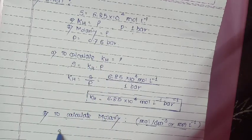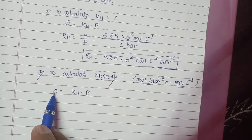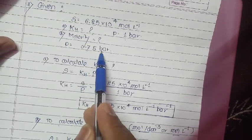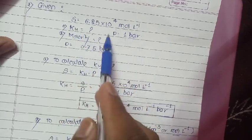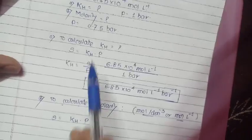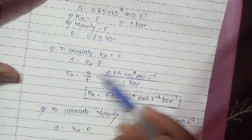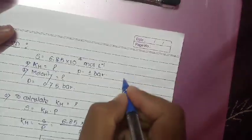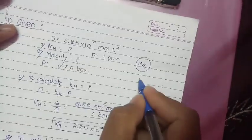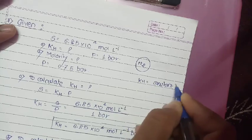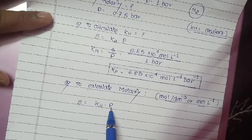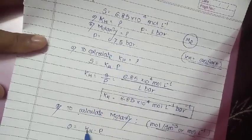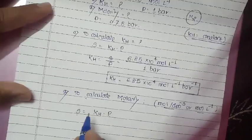We again use Henry's law: S = KH × P, but now at partial pressure 0.75 bar. In the first case we calculated the Henry's law constant at 1 bar. The gas is still nitrogen, and Henry's law constant KH is specific to that particular gas. To calculate S, we need KH and P. P is already given as 0.75 bar, and KH was calculated in the first step.